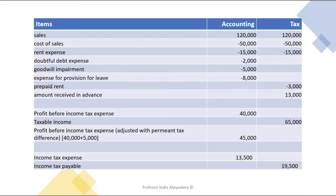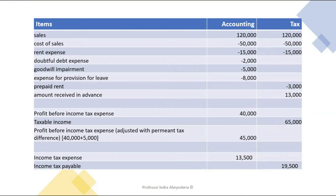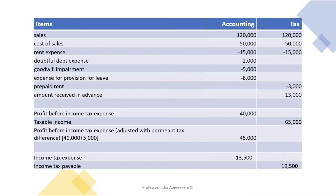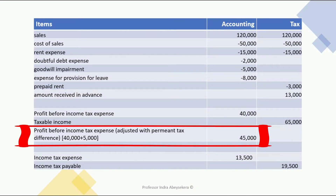The profit before income tax expense is $40,000 and taxable income is $65,000. However, the profit before income tax expense must be adjusted for any permanent taxation difference. Goodwill impairment of $5,000 is an expense for accounting but is not deductible for tax at all, making it a permanent difference. This permanent difference is added back to profit to arrive at an adjusted profit before income tax expense of $45,000.